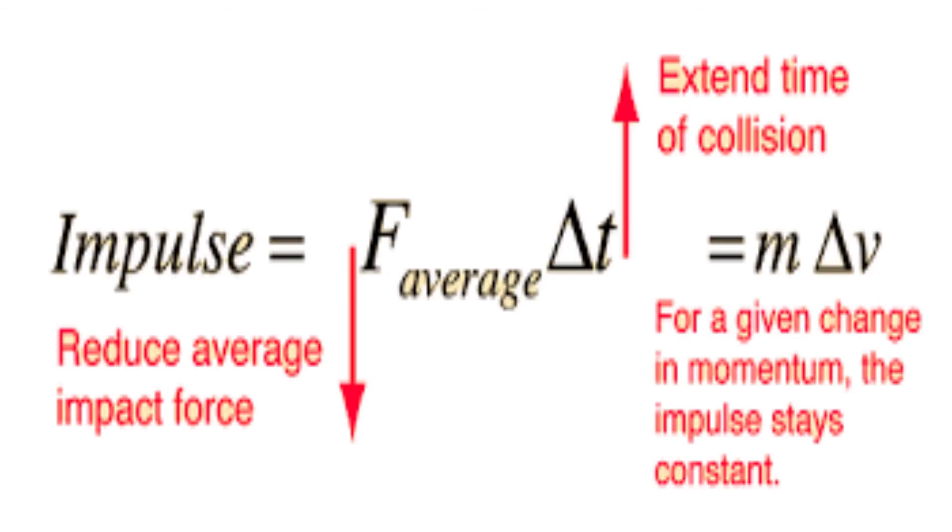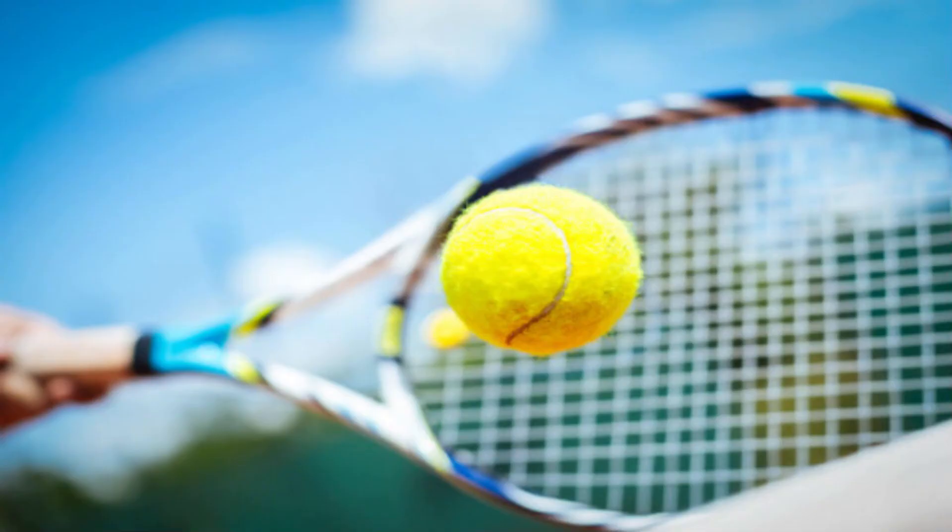Impulse is measured by how much the momentum of an object changes due to a force acting upon an object. Going back to the tennis ball example, if it were to be hit back, you would find the impulse of the ball by multiplying the force exerted onto the ball by the time it took for the racket to hit the ball.